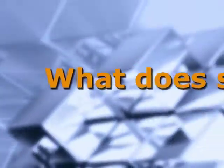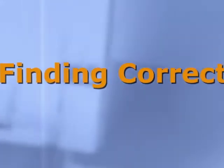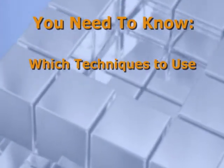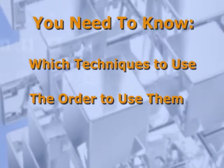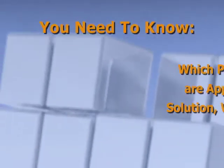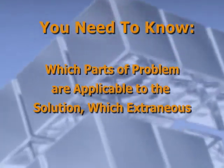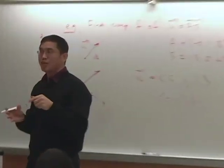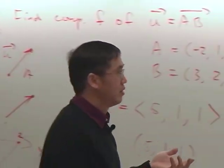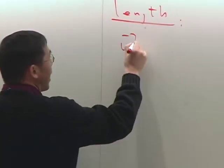They have to understand why they do it. Finding the right answer may require using multiple techniques. You have to know which techniques to use and what order to use them. You have to know which parts of the problem are applicable to the solution and which are extraneous. You'll be lost unless you know why you're doing what you're doing, says math prof Yiffy Pan of Indiana Purdue University at Fort Wayne.